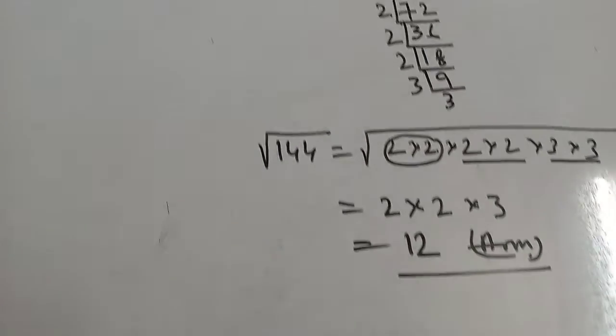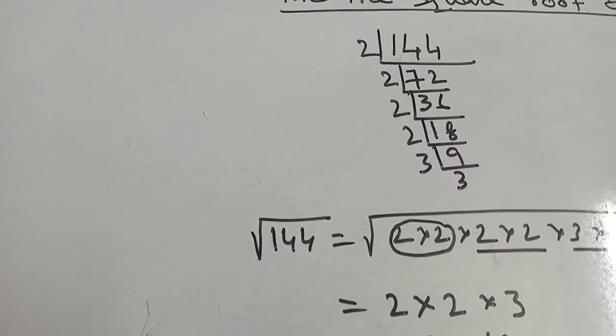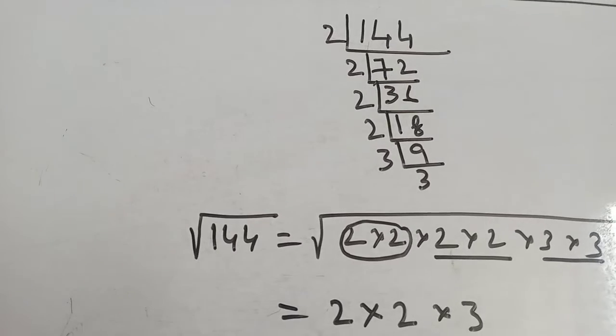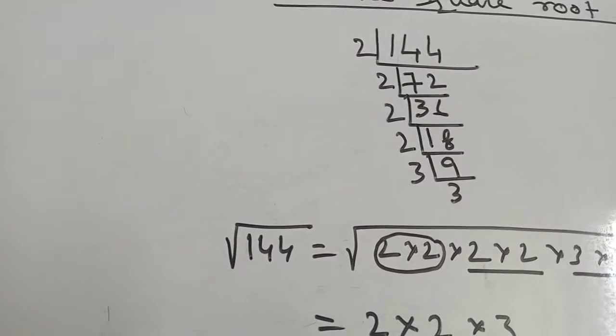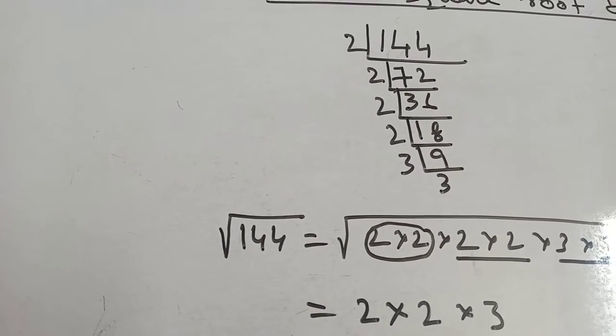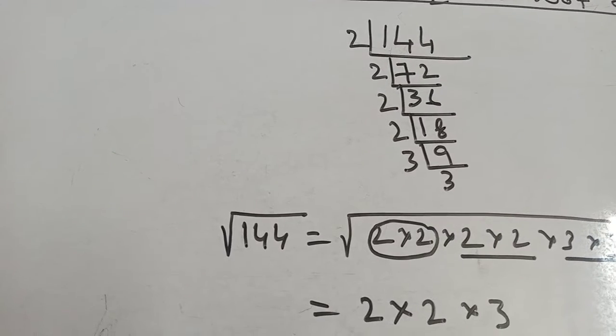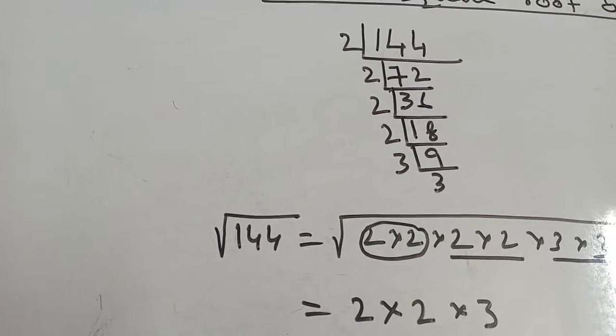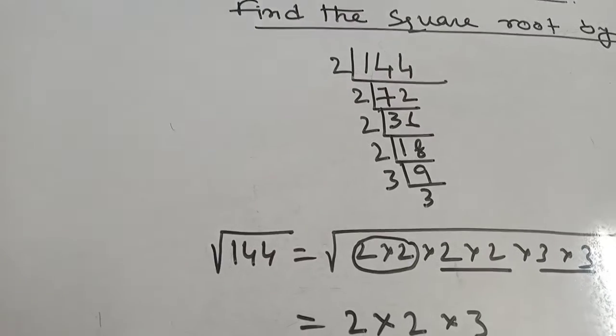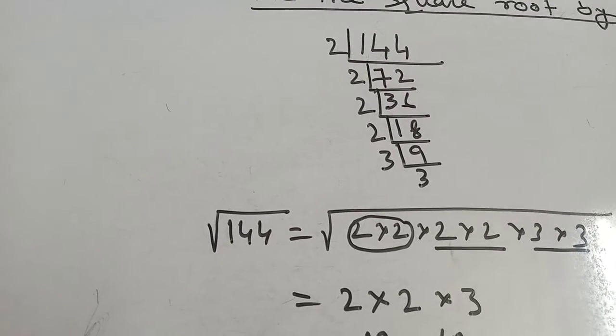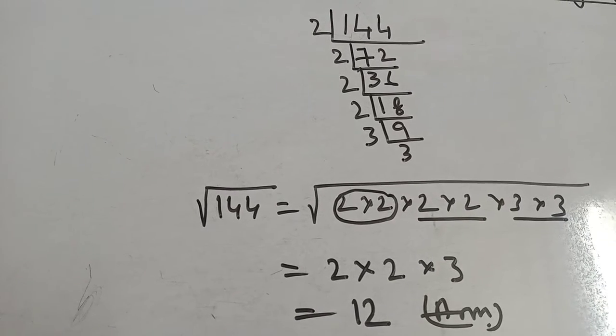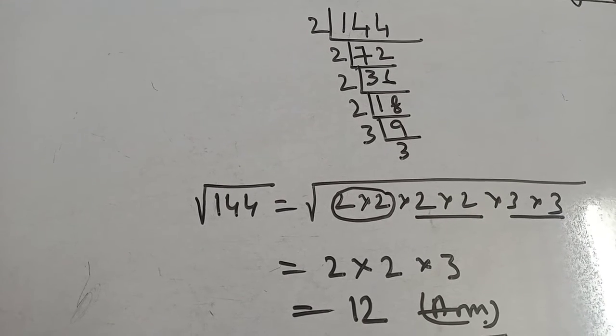Any number, at first you break into prime factors. Like 144, first it is going by 2 because the last digit of 144 is 4, that is even number. Divided by 2 that means 72, again divided by 2 that means 36, again to 18, again to 9, again 3, 3.